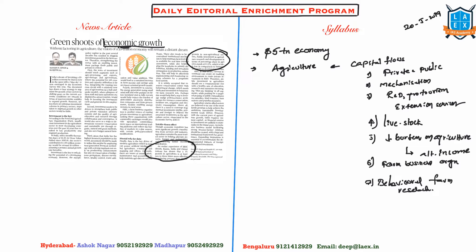This article emphasizes that if India needs to achieve the 5 trillion dollar economy vision or target, it needs to emphasize the agriculture sector. Leaving behind the agriculture sector, we cannot achieve these dreams. Economic growth means increased production, and here the author says that increased production shall be in agriculture.